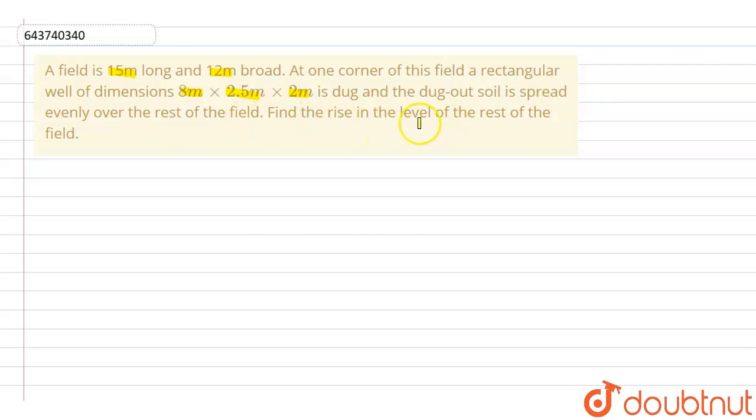find the rise in the level of the rest of the field. So first of all, in this question we see that the length of the rectangular field is given to be 15 meter and the breadth is given to be 12 meter.